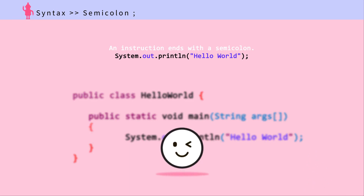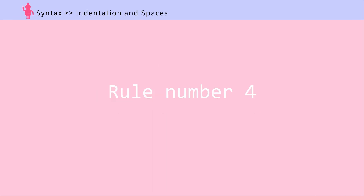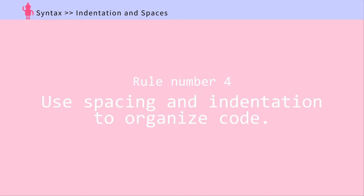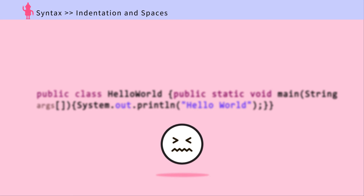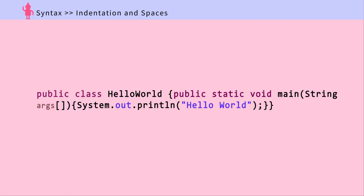Small but important. Rule number four: use spacing and indentation to organize code. Indentation or spacing doesn't really affect the performance of the code. However, it helps programmers quickly read and understand code. People may have different ways of using spaces, depending on their style. Use the tab key to indent.